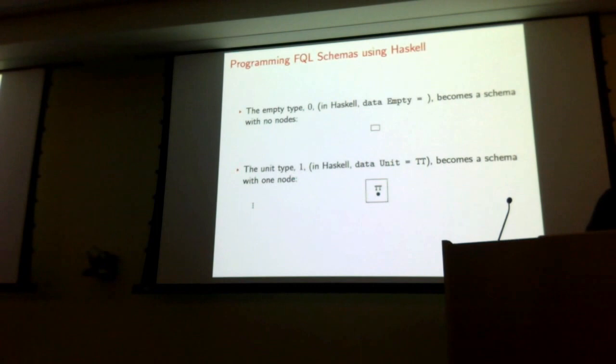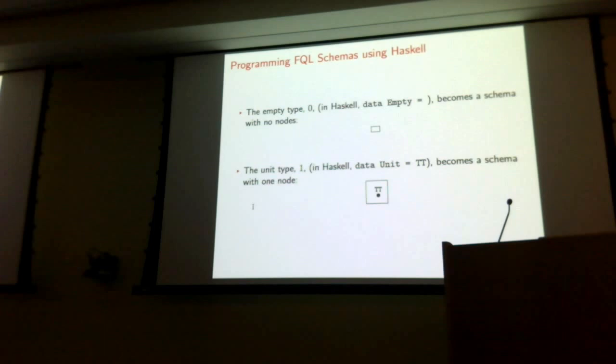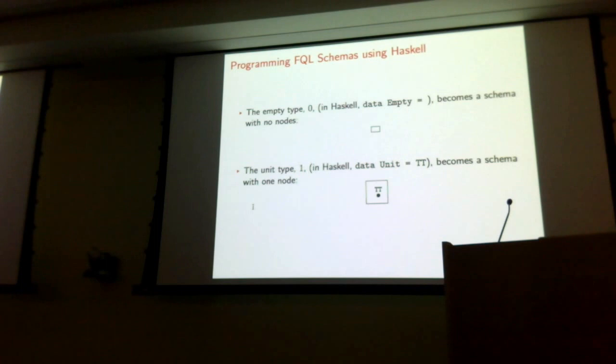Let's start by showing how to translate from types in the simply typed lambda calculus to schemas in FQL. Starting with the empty type zero — in Haskell this is a data type with no constructors — that becomes an FQL schema with no nodes. If you give me a unit type in Haskell — you can write data unit equals something with one constructor — that would become an FQL schema with just one node.